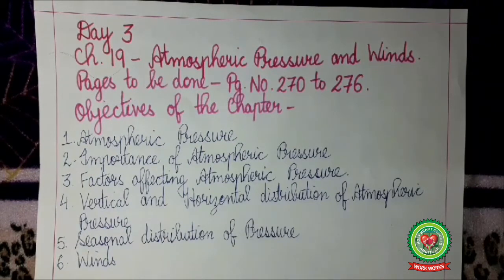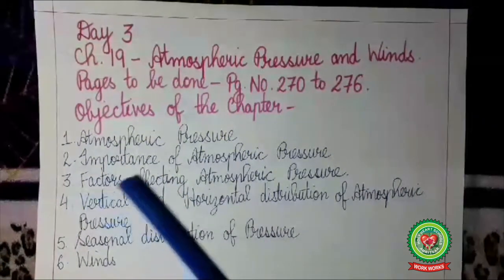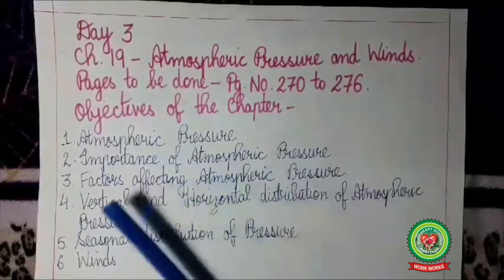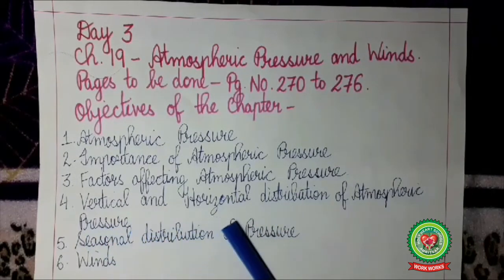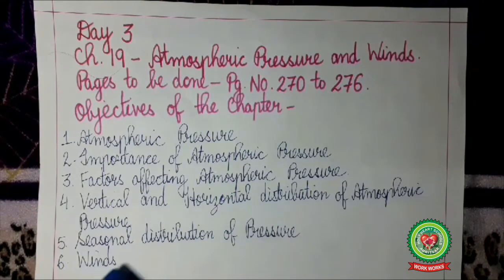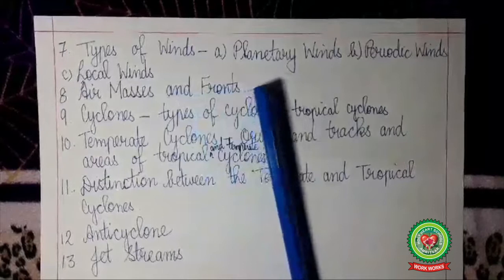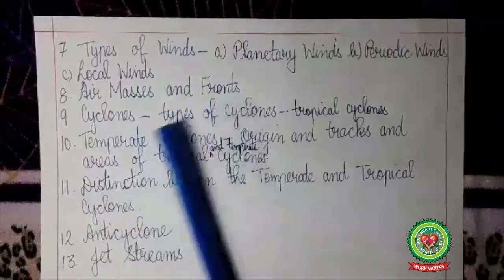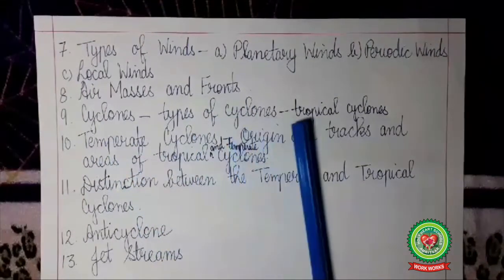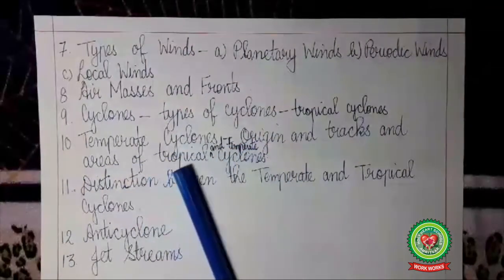In this chapter we will study: number one, atmospheric pressure; number two, importance of atmospheric pressure; number three, factors affecting the atmospheric pressure; number four, vertical and horizontal distribution of atmospheric pressure; number five, seasonal distribution of pressure; number six, winds; number seven, types of winds — planetary winds, periodic winds, and local winds; next, air masses and fronts; cyclones, types of cyclones — tropical cyclones, temperate cyclones — origin, tracks, and areas of tropical and temperate cyclones.